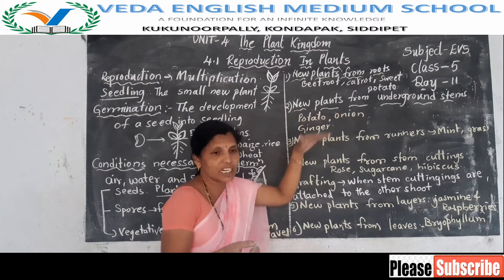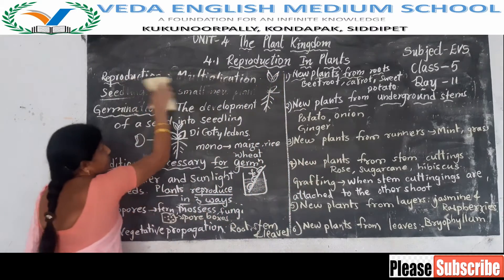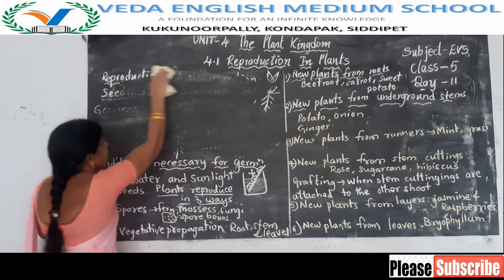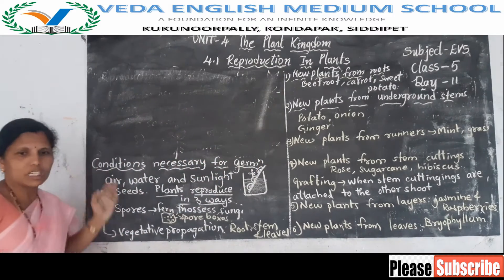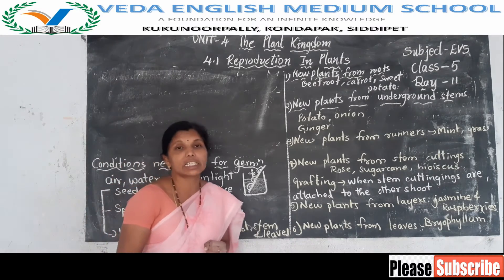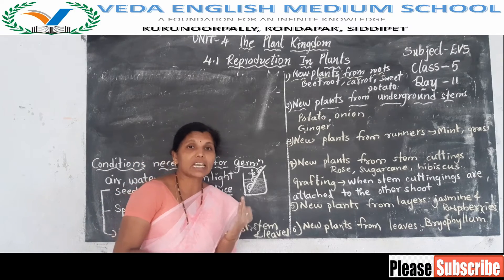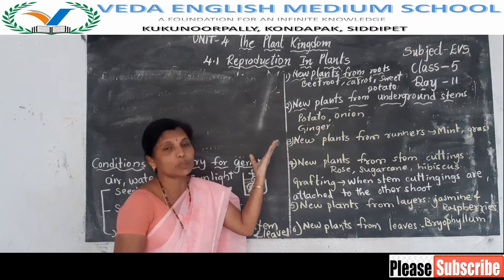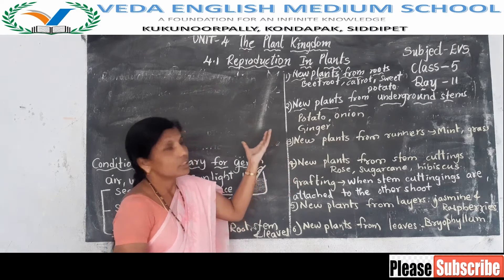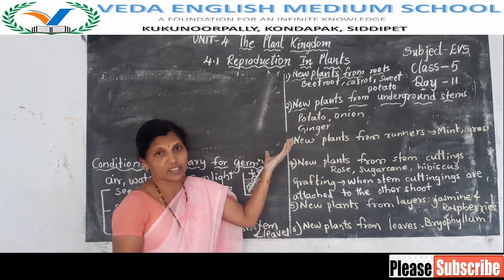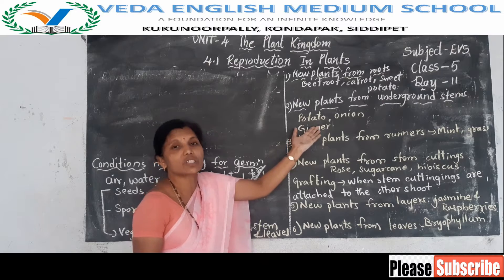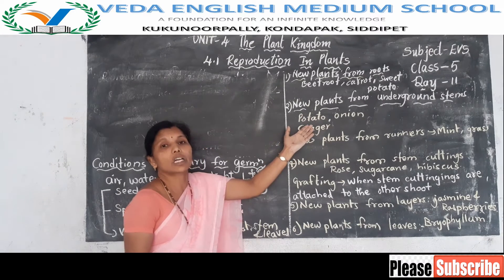Next, new plants from underground stems. Some plants store their food in underground stems — potato, ginger, and onion. Other plants store their food in their roots — beetroot, carrots, sweet potato, and turnip. If you plant these in soil, they grow into a new baby plant. Potato, onion, and ginger are underground stems.